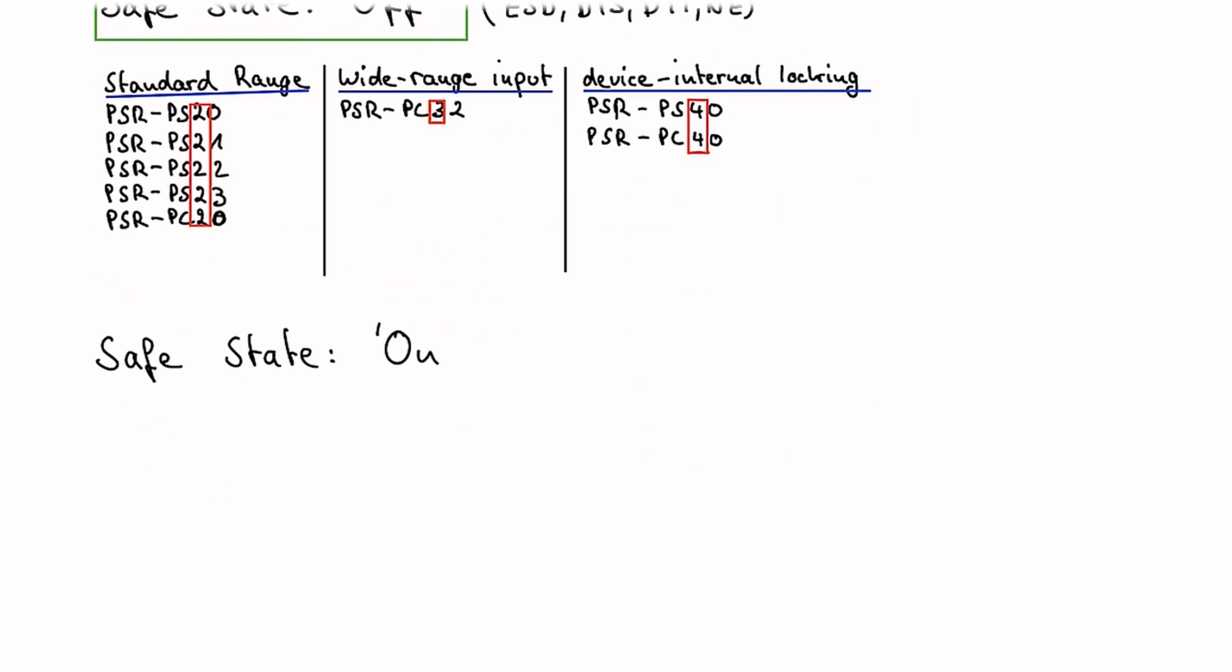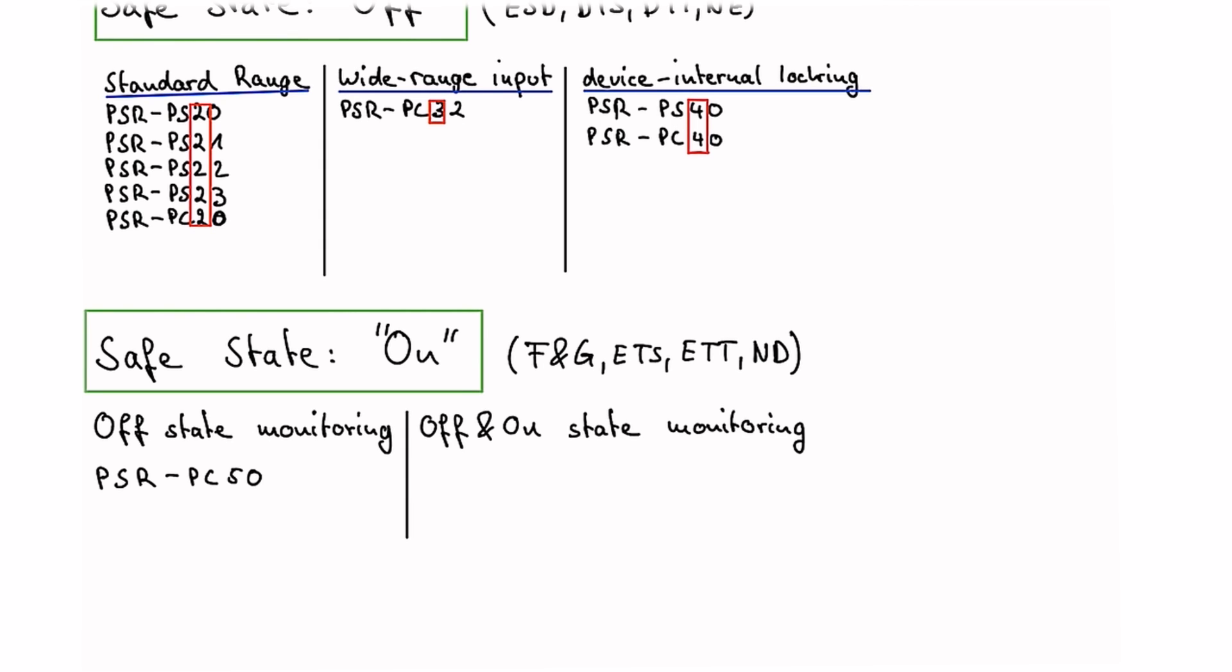Now let's come to safe state on applications. This will also be covered in one of the next episodes. In safe state on we distinguish between different monitoring options. On the one side we have off state monitoring, and on the other side we have on and off state monitoring.